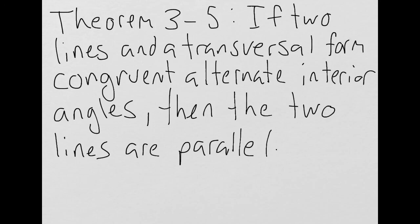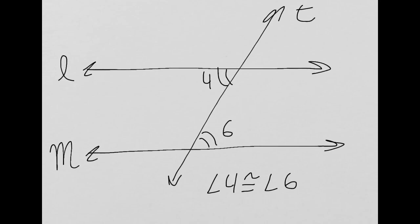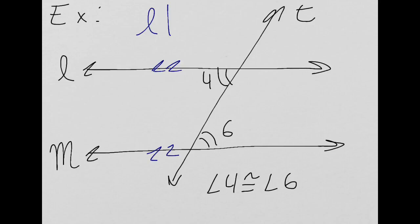Next up we have theorem 3-5, the converse of the alternate interior angles theorem. The alternate interior angles theorem says that if two lines are parallel and they're cut by a transversal, then that'll form congruent alternate interior angles. This theorem says that if two lines and a transversal form congruent alternate interior angles, then we know the lines are parallel. So in this diagram, if angle 4 is congruent to angle 6, then line L is parallel to line M.